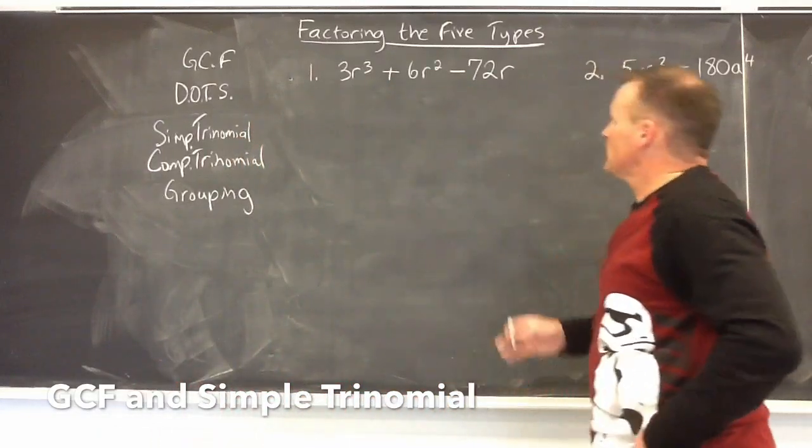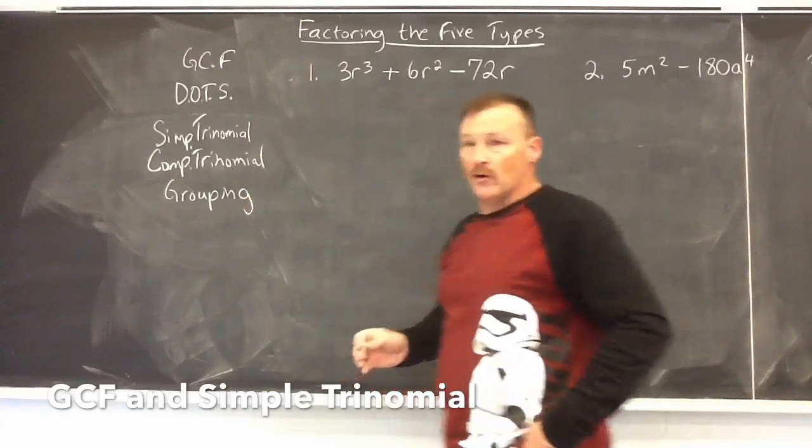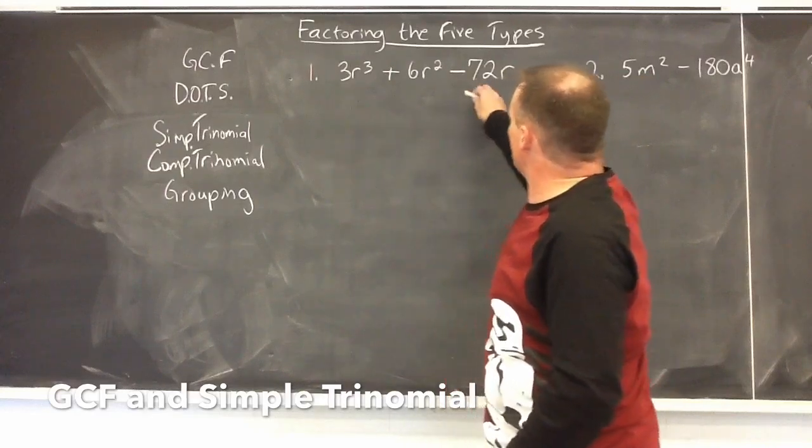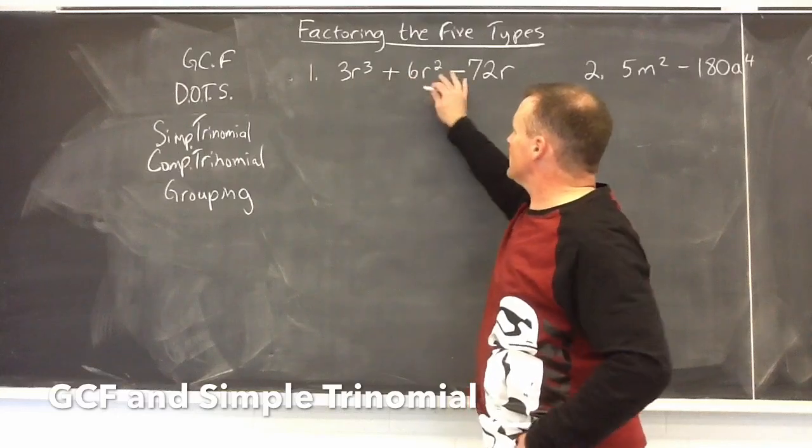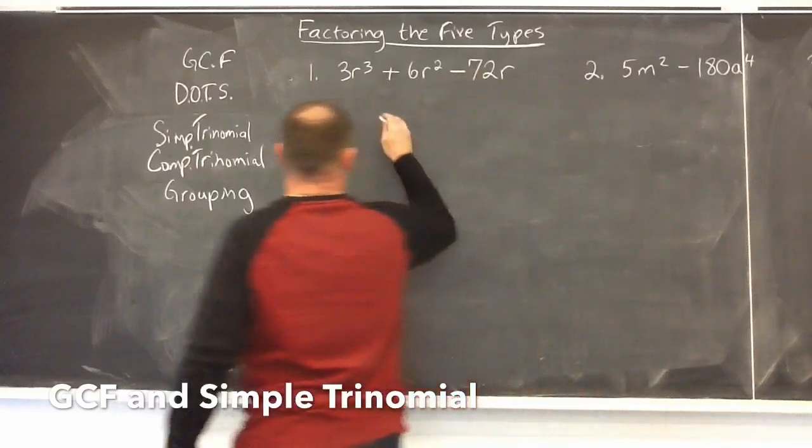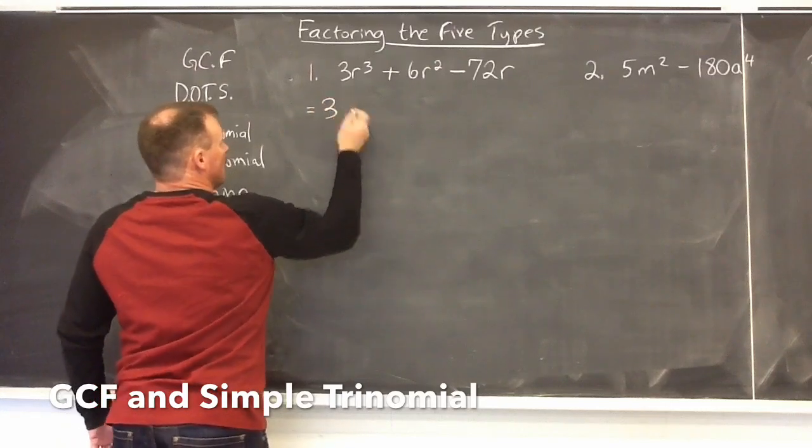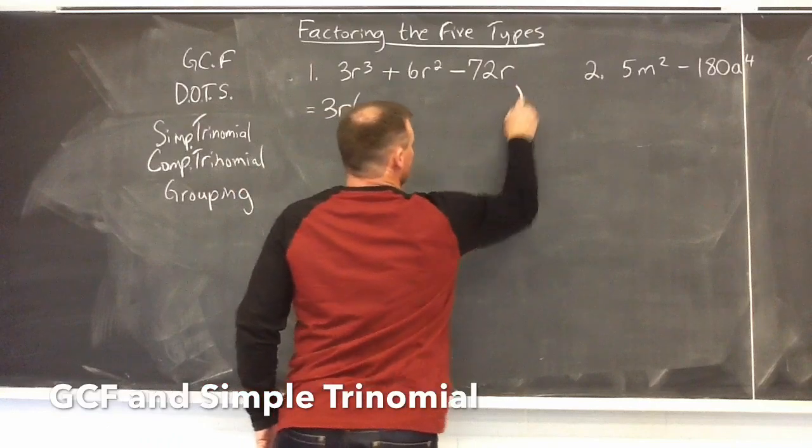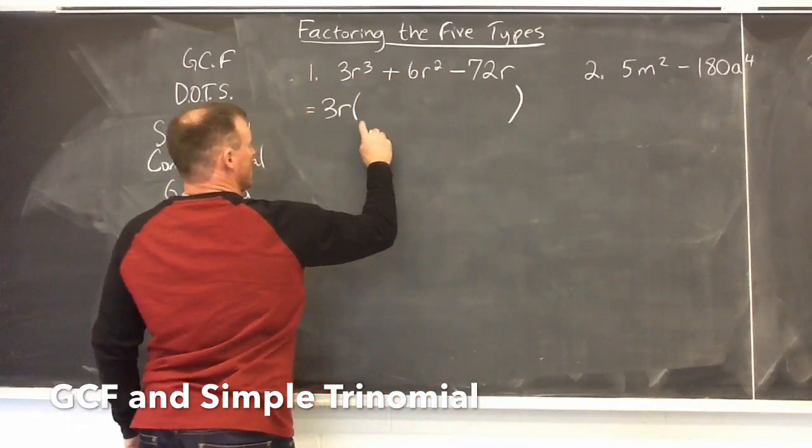Right away, let's start with number one. We have three terms, so it's probably going to be either the simple or complex trinomial, and we start with the GCF. I see three will go into all three of the terms, and I also look at the variable and can tell that there's an R that could be factored out of all three. Out in front, I'm going to be factoring out a common factor of 3R. You have to divide it out of all three of the terms, and so you make sure you keep the same number of terms and the same signs.